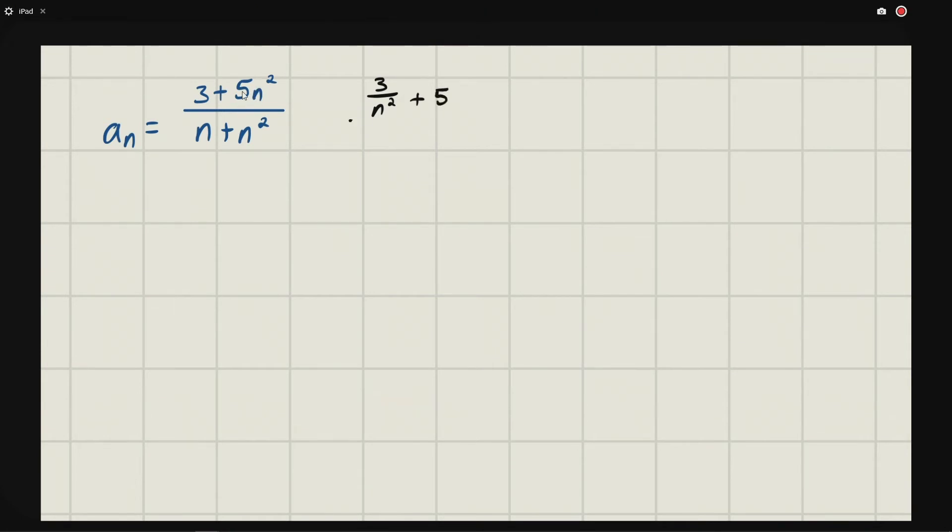Over n squared n divided by n squared that's just one over n and then n squared divided by n squared is one. So we'll take the limit of this.